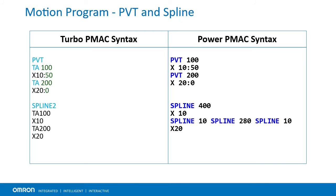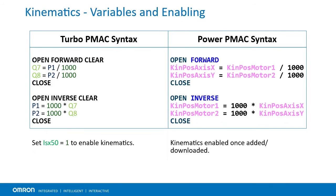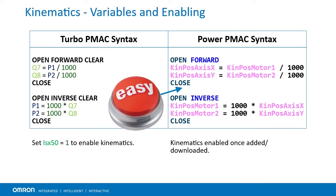In Turbo PMAC, spline 1 was used for uniform splines and spline 2 was used for non-uniform splines where the move time can be changed with TM or TA depending on I-42. In Power PMAC, there is only one spline command and it is followed by a move time, which can be changed as often as a spline is issued. For fine control of acceleration, movement, and deceleration segments, up to three spline commands can be placed on one line. For the non-uniform spline times to work in the same way as in Turbo PMAC, ChordX.SplineTimeRotate must be set to 1. In Turbo PMAC kinematics, P variables represented motor positions and Q variables represented axis positions. In Power PMAC kinematics, KinPosAxis and KinPosMotor variables, which do not need to be declared, are used instead.